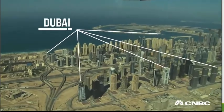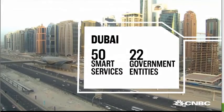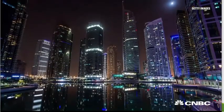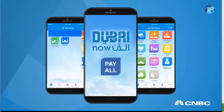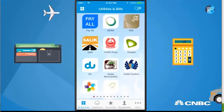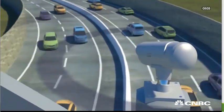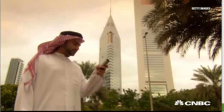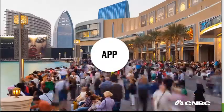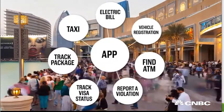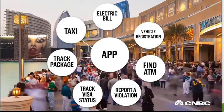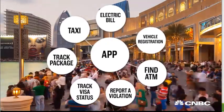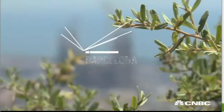Over in Dubai, more than 50 smart services from 22 government entities have been rolled out as part of the Smart Dubai initiative. Using the government-provided app Dubai Now, you can pay a speeding ticket captured on a public camera and emailed directly to you. You can also use the same app to pay your electric bill, call a taxi, track a package, find the nearest ATM, renew your vehicle registration, track the visa status of a relative, and report a violation to the Dubai Police.